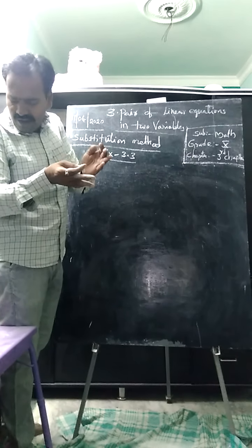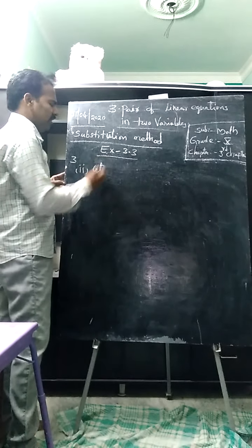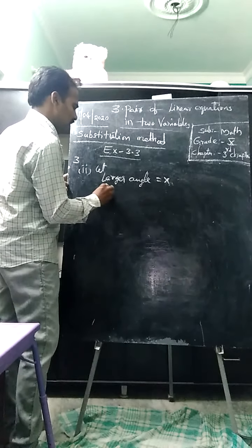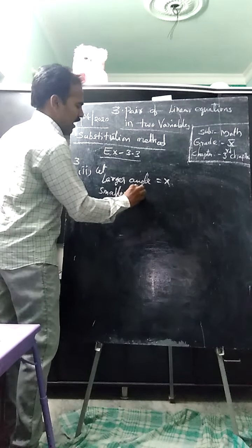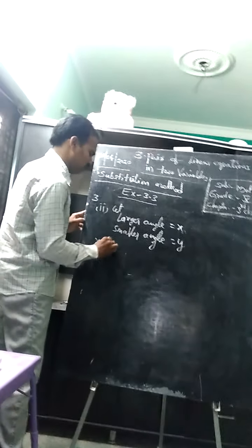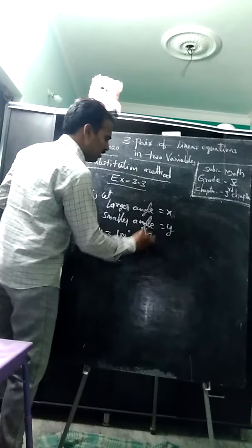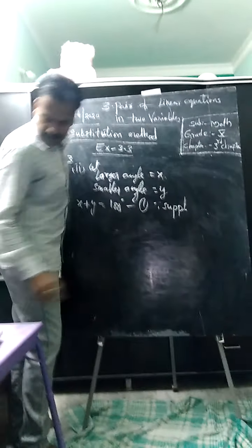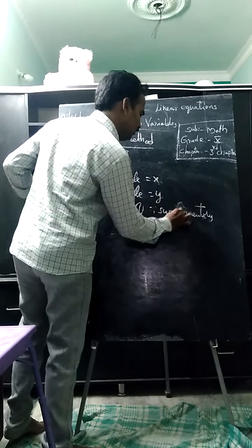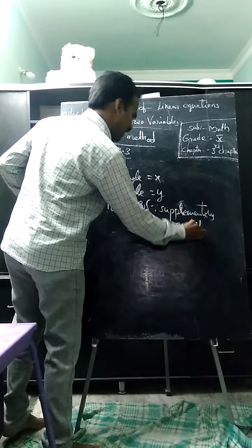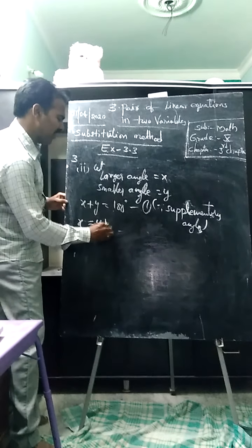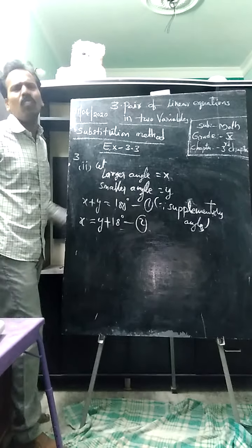The larger angle exceeds the smaller by 18 degrees. Let us take the larger angle as x and the smaller angle as y. Since they are supplementary, x plus y equals 180 degrees — equation 1. The larger exceeds the smaller by 18, so x equals y plus 18 degrees — equation 2. No need to simplify further; directly substitute equation 2 into equation 1.